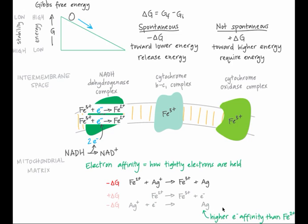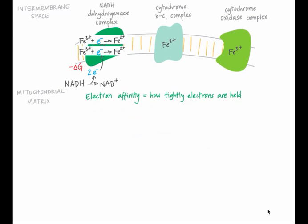So the electron is more stable when silver has it than when iron 2+ has it. Likewise, NADH dehydrogenase complex has a higher electron affinity than does NADH. So electrons will move to NADH dehydrogenase complex, reaching lower energy and thus greater stability. This is a spontaneous process with a negative delta G because it results in more stable products.